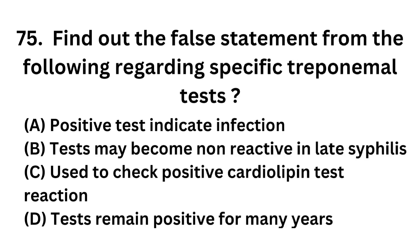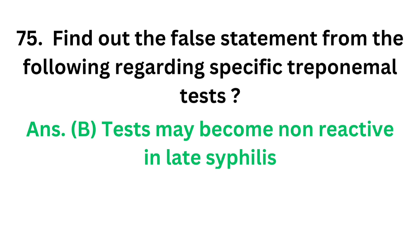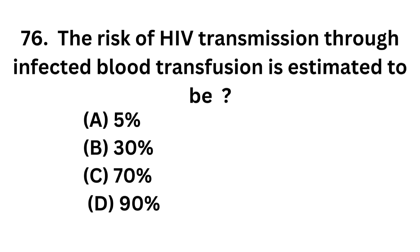Question 75. Find out the false statement from the following regarding specific treponemal test: Option A: Positive test indicates infection. Option B: Test may become non-reactive in late syphilis. Option C: Used to check positive cardiolipin test reaction. Option D: Test remains positive for many years. The correct answer is Option B. 'Test may become non-reactive in late syphilis' is the false statement about specific treponemal antibody test.